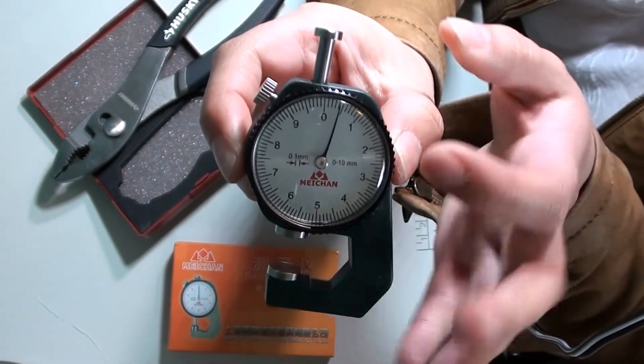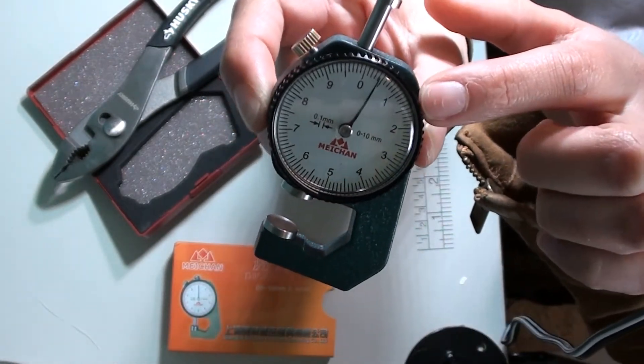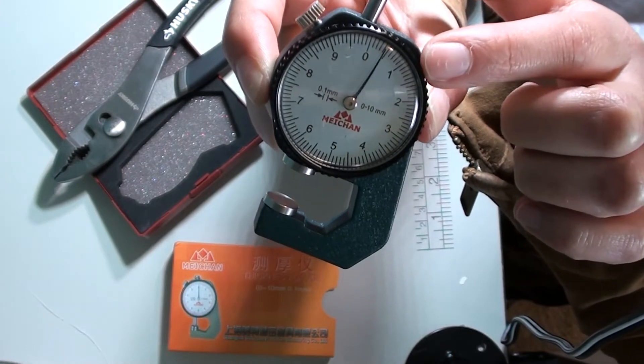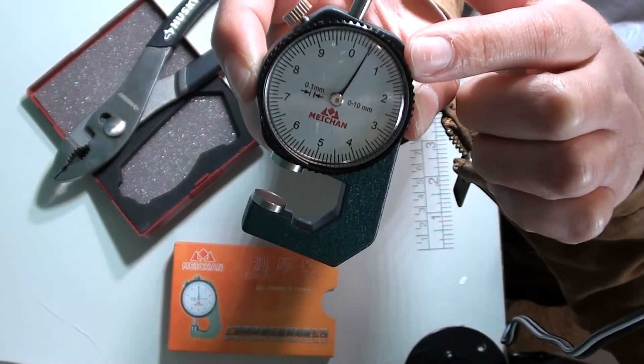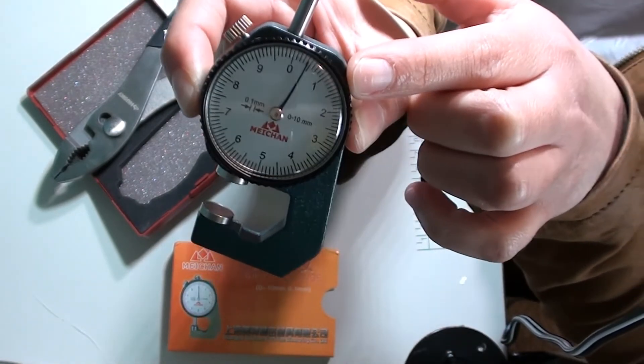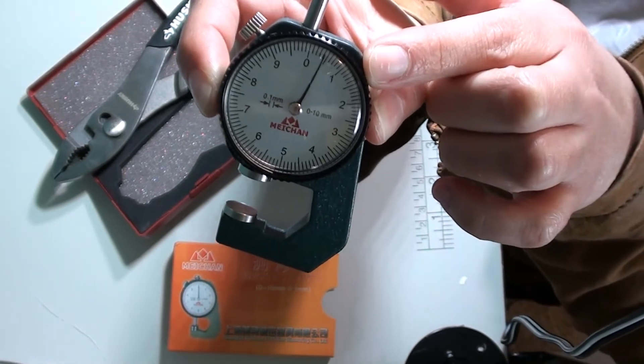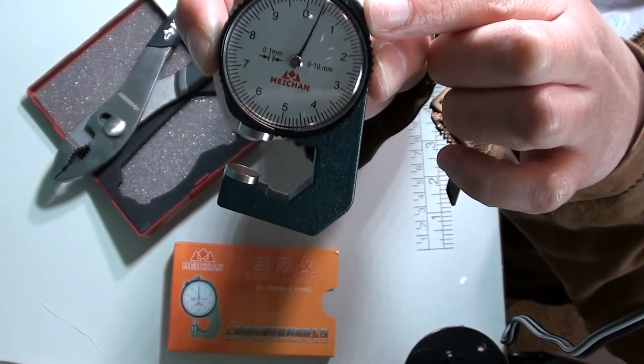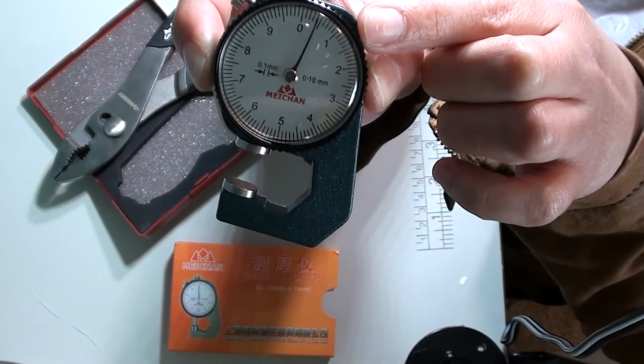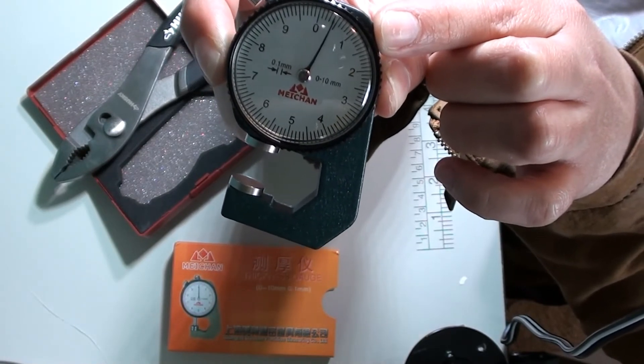And when you let it go, the gauge is not going to read zero. It's going to read 0.4 millimeters or 0.5 or 0.6.